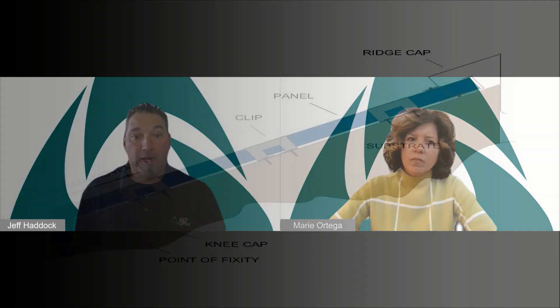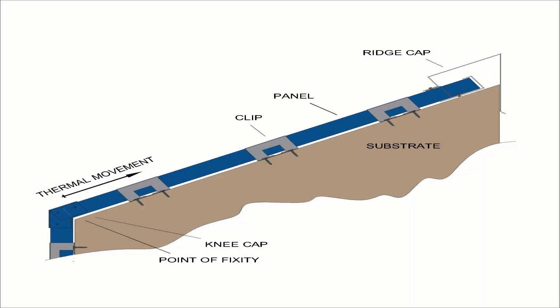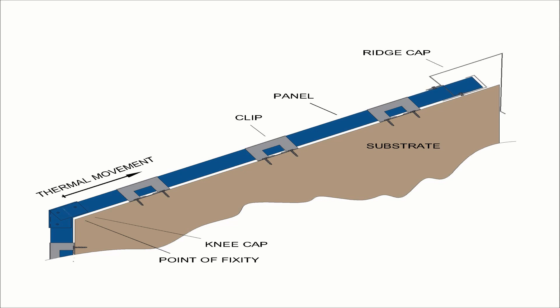The second way to accommodate thermal movement is along the eave line or low end of the panel, requiring panels to expand and contract uphill to the ridge. An example is a continuous transition of the roof panel over the eave where panels are folded down the fascia without a break in the material. This fold creates a point of fixity, and a specialized ridge detail allows the roof panels to push into the ridge without tearing it apart.